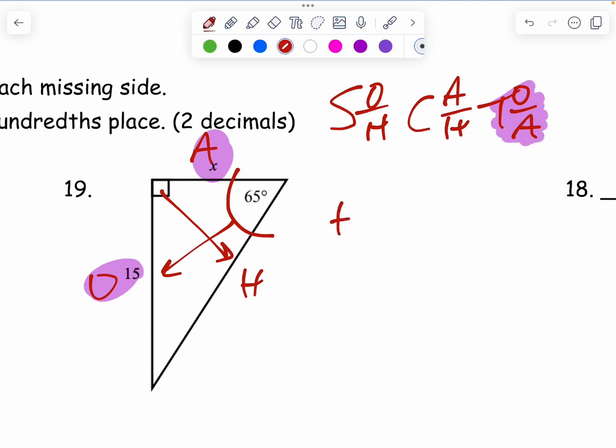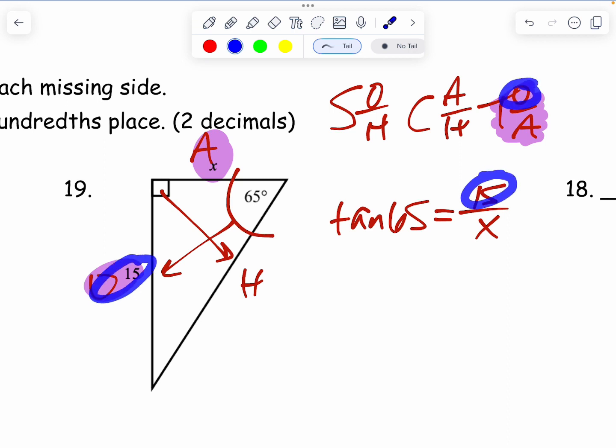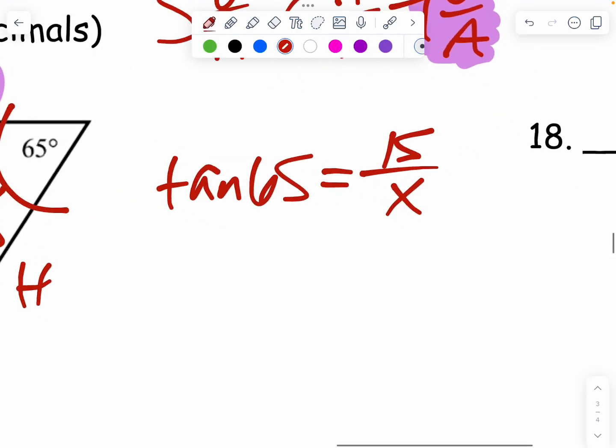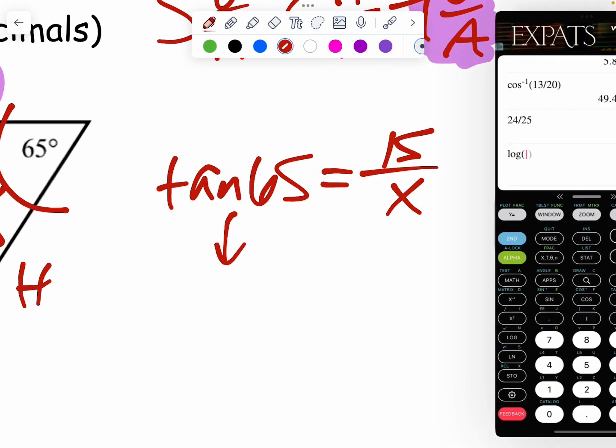So I'm going to do tan 65. And remember that tangent is O divided by A. So I'm going to put the 15 on top and the X on the bottom and make sure that fraction goes in the right spot with the numbers in the right place. Again, the O has to go on top. So that's why I put the 15 there. The A has to go on the bottom. That's why I put the X there.